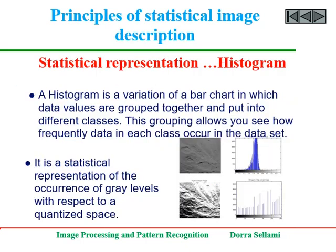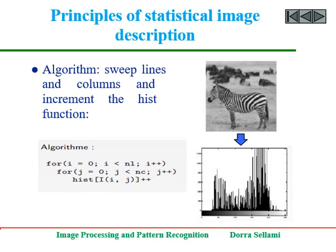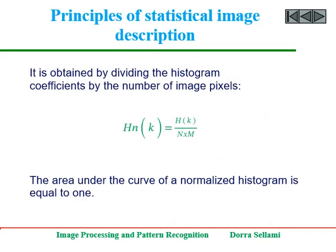A histogram is a variation of a bar chart in which data values are grouped together and put into different classes. This grouping allows you to see how frequently data in each class occur in the dataset. It is a statistical representation of the occurrence of grey levels. For an image f of size n by m, the histogram h is described for each level k, where h(k) is the cardinal of the set of pixels having grey level value k. The algorithm sweeps lines and columns and increments the h function at each grey level. A normalized histogram is obtained by dividing the histogram coefficients by the number of image pixels, and the area under the curve of a normalized histogram equals 1.